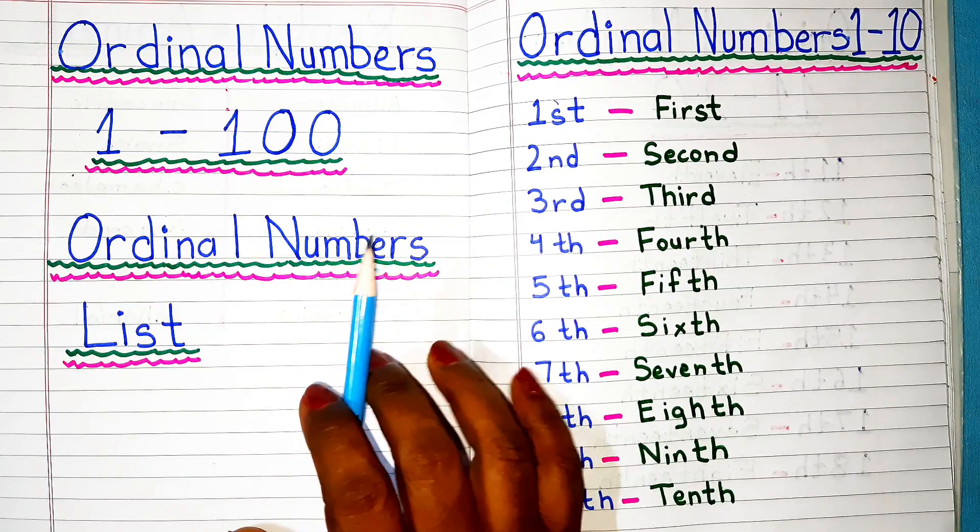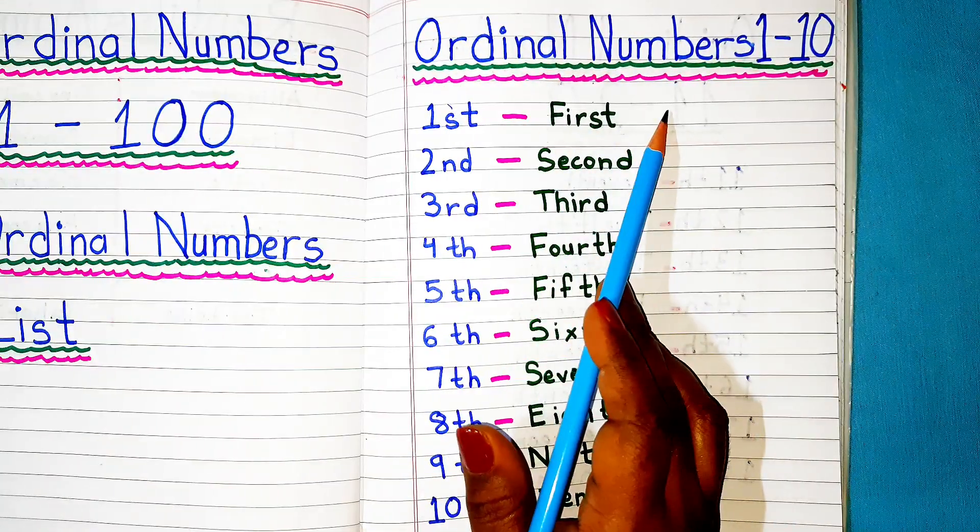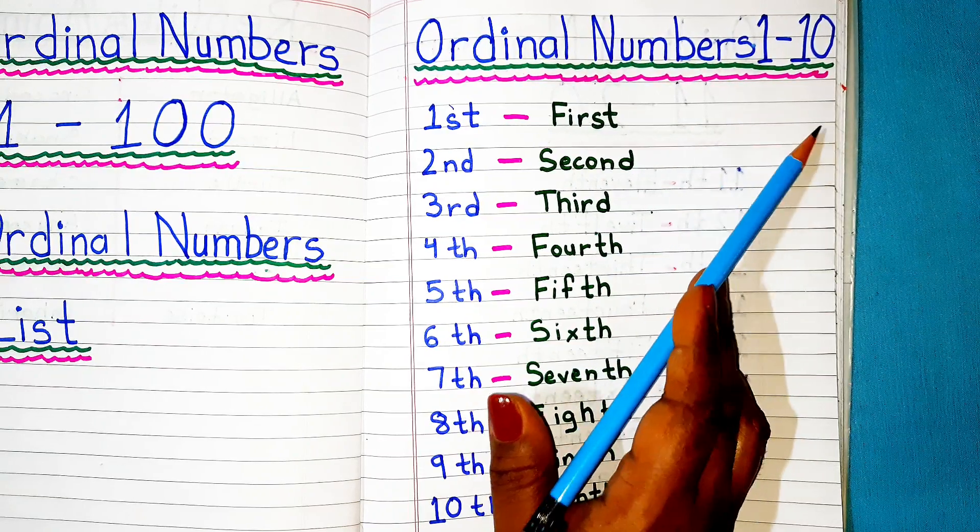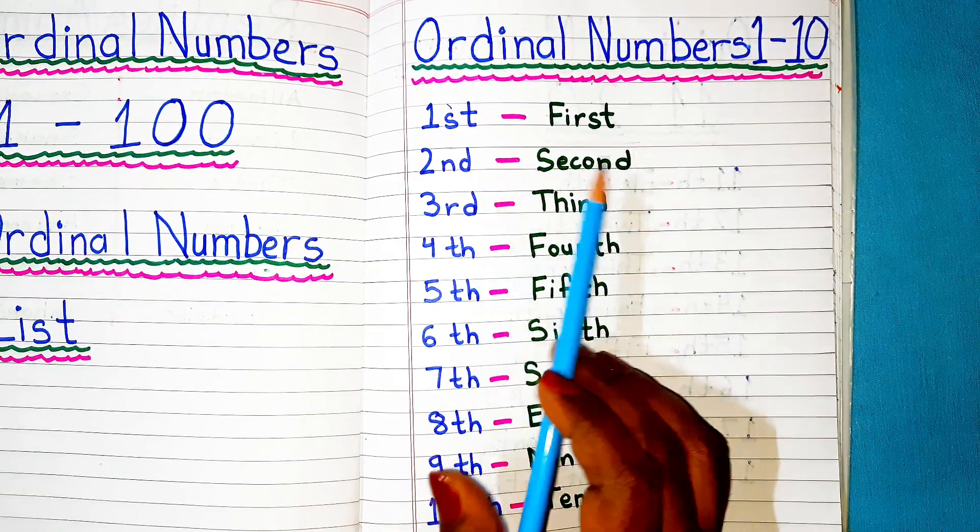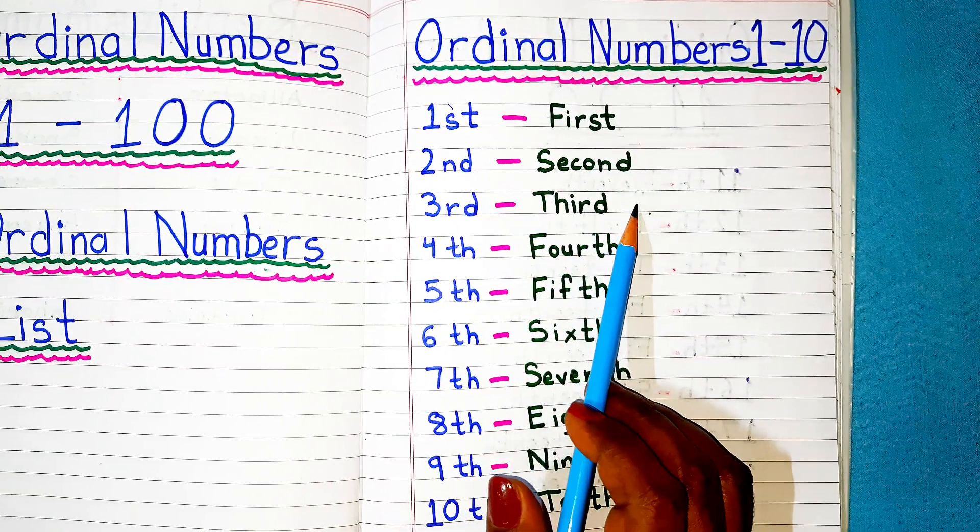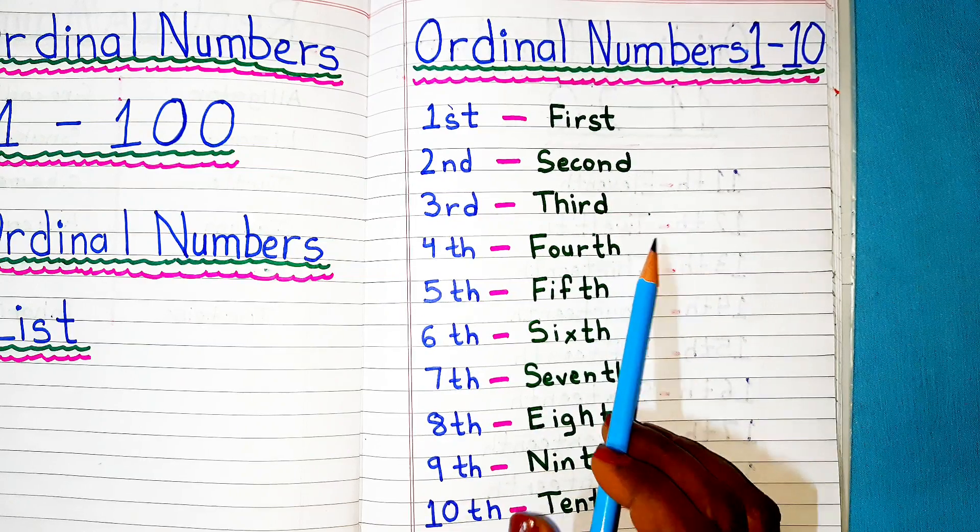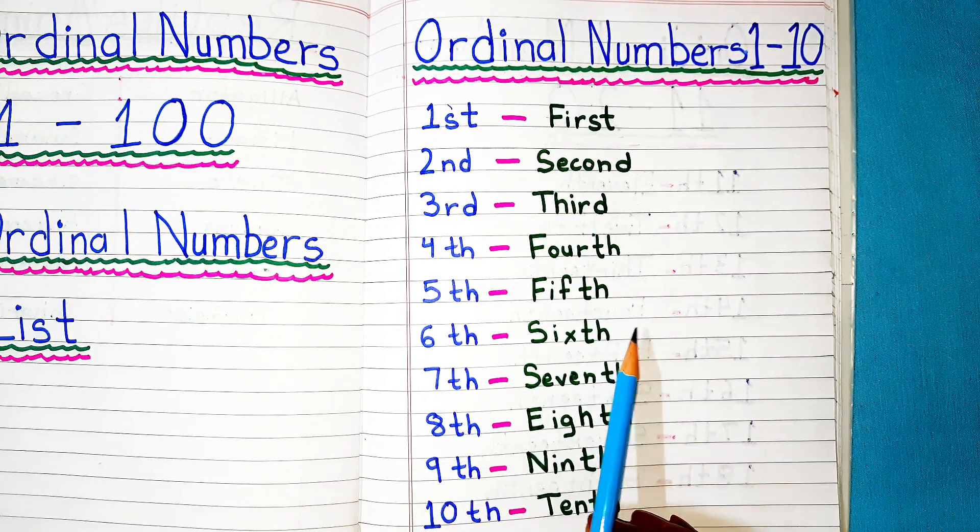Let's begin with ordinal numbers 1 to 10: 1st, 2nd, 3rd, 4th, 5th, 6th, 7th, 8th, 9th, 10th.